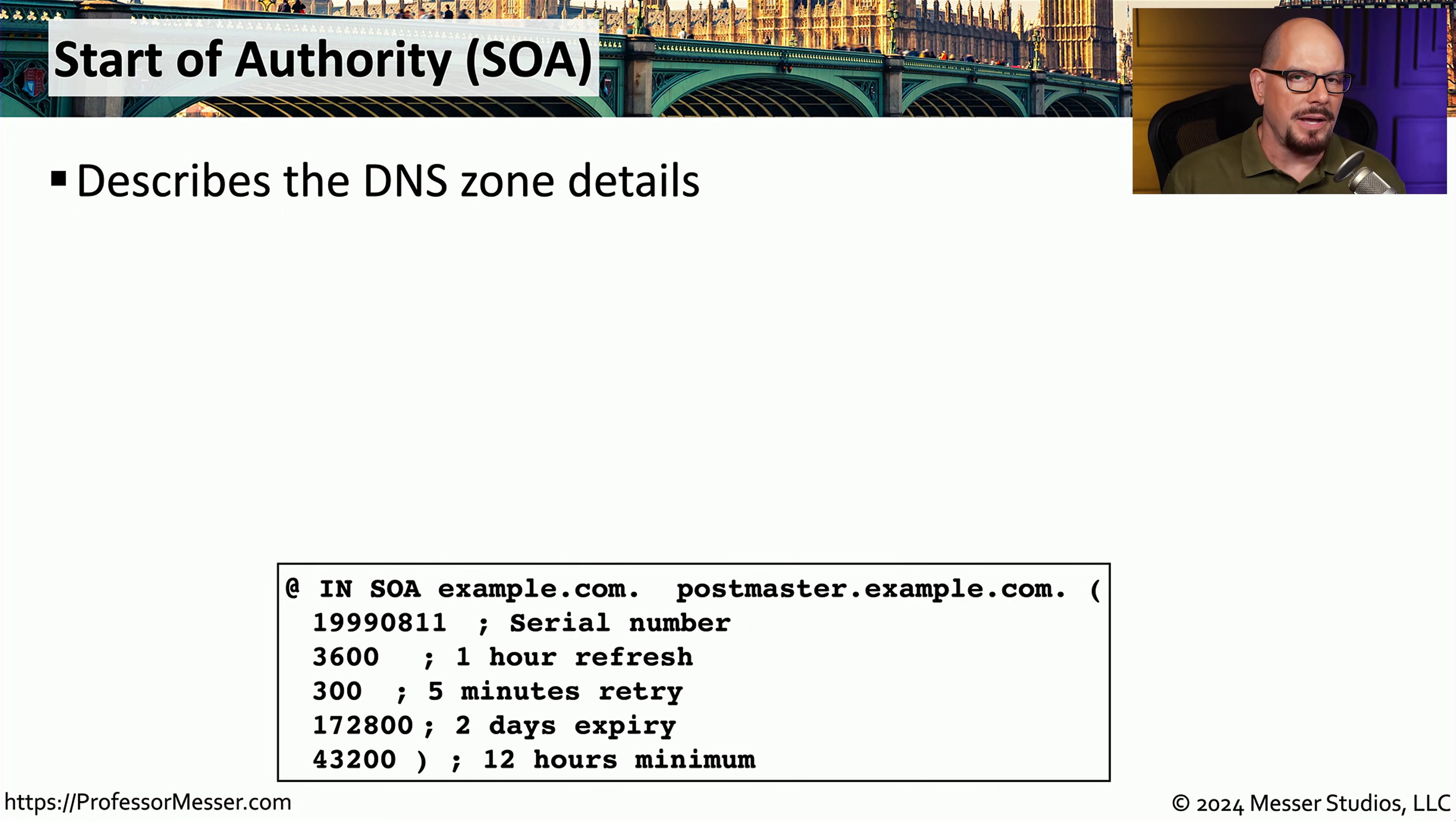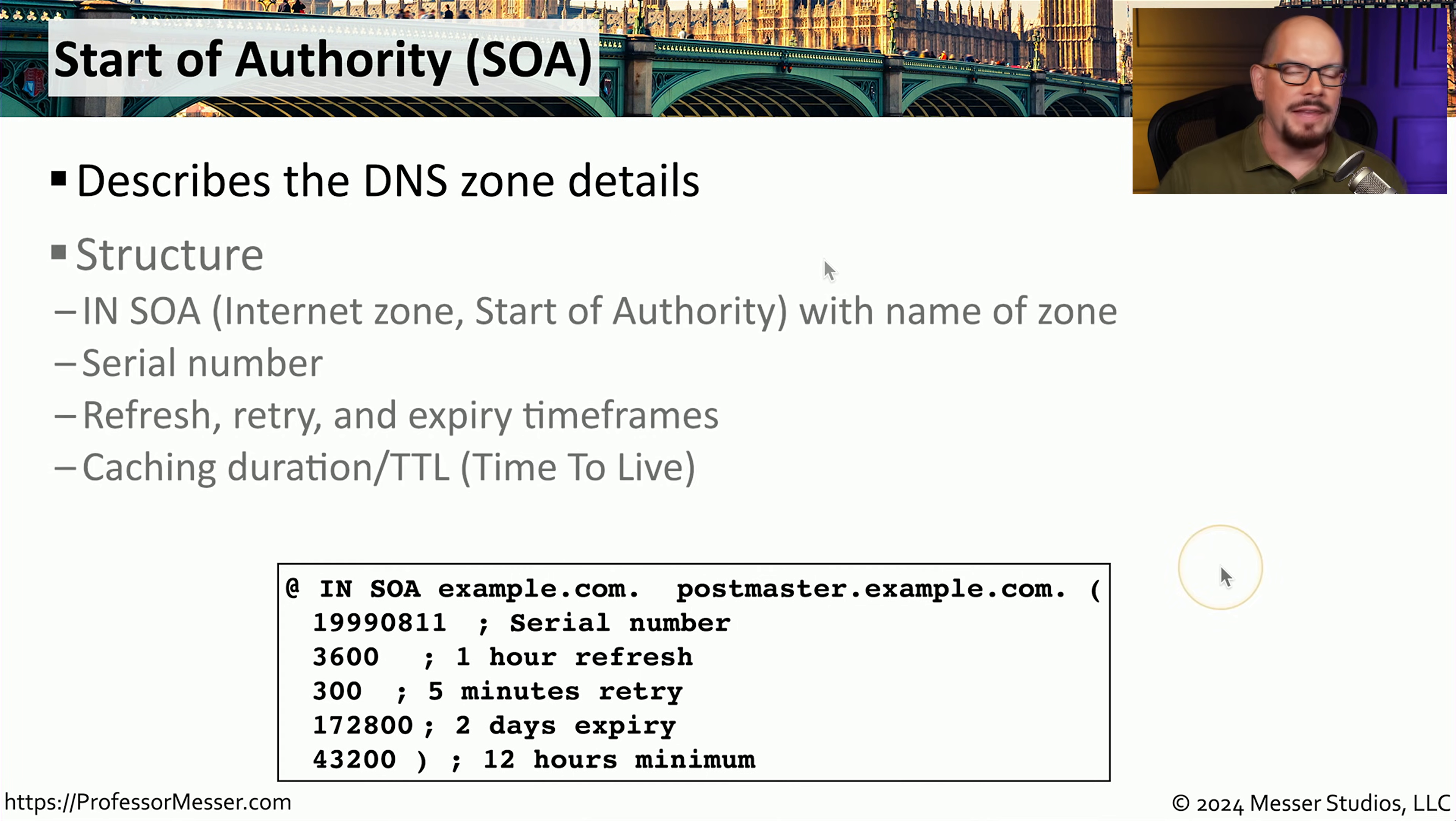At the very top of the DNS configuration file is a Start of Authority record, or an SOA. This gives us an overview of what we will find inside of this DNS configuration. Information such as the DNS zone details, so we can see what domain this particular DNS configuration is a part of. You can see serial number information, and you can find details about retries, expirations, and how long information should be stored.